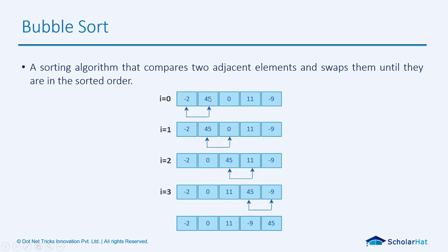Here you can see there will be no swap between 2 and 45, so 2 remains at the same position. After that, 45 and 0 are checked — since 0 is lesser, it comes to the first position and 45 jumps over. Then 45 and 11 are checked, 11 jumps over, and then 45 and -9 are checked, -9 jumps ahead. It will keep on swapping until we get the desired output. We're going to write this in a for loop.